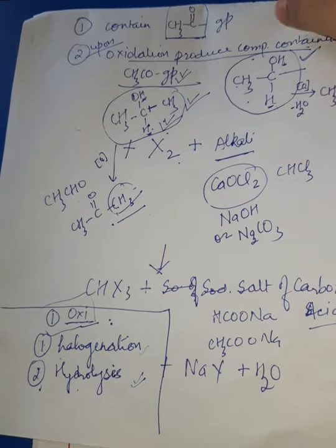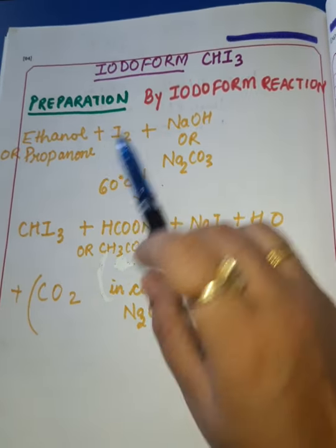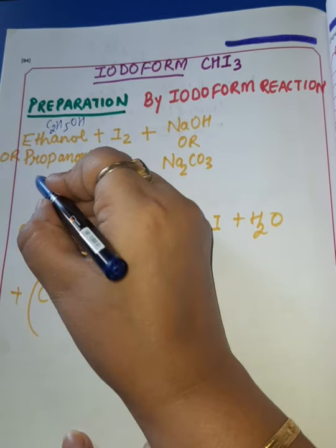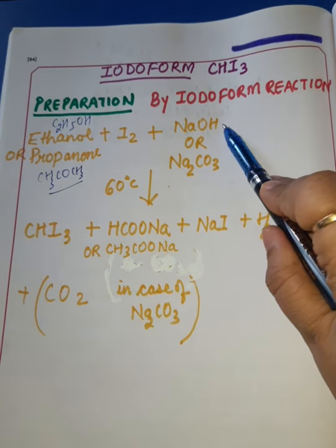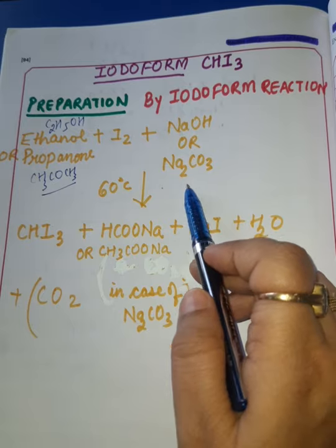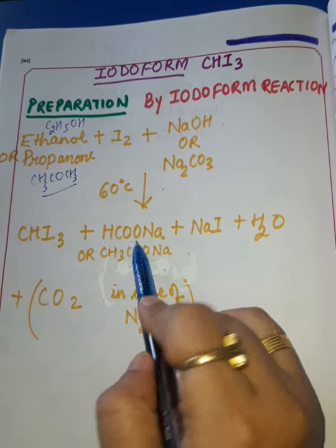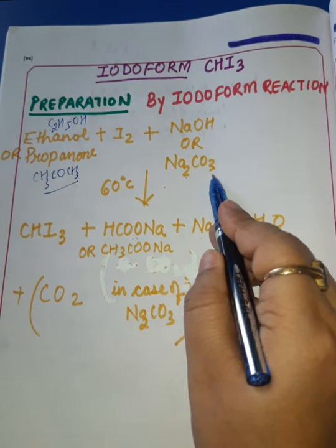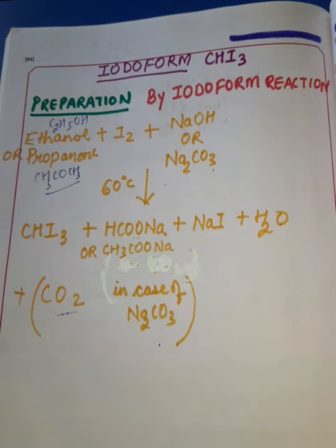Now we are studying Iodoform reaction as an example of the Haloform reaction — preparation of Iodoform. For Iodoform particularly, we take either ethanol (C2H5OH) or propanone (acetone, CH3COCH3). The reaction is with iodine in the presence of alkali NaOH or Na2CO3, and we heat it up to 60 degrees Celsius.